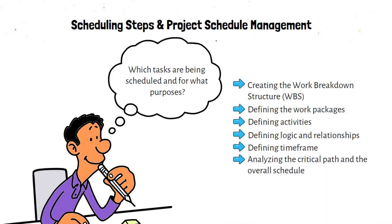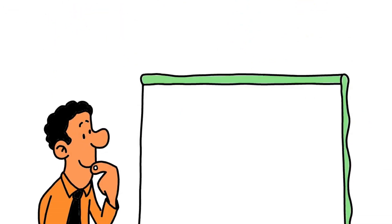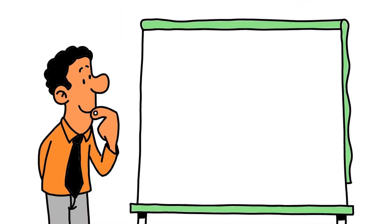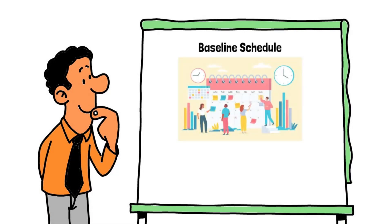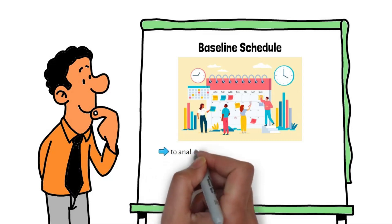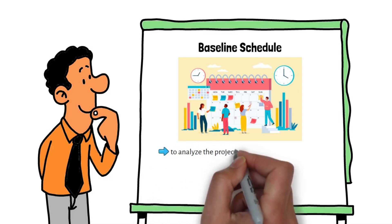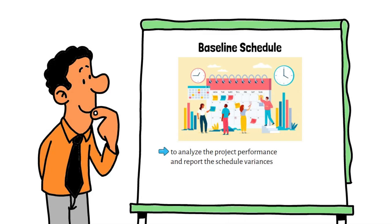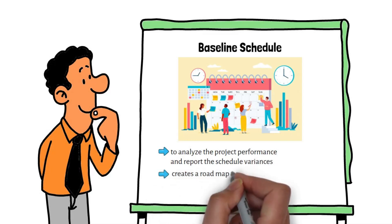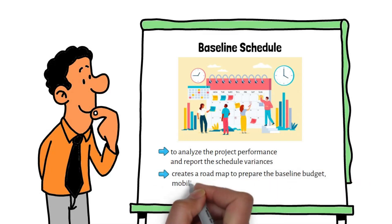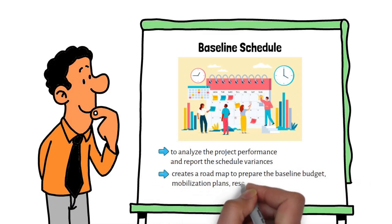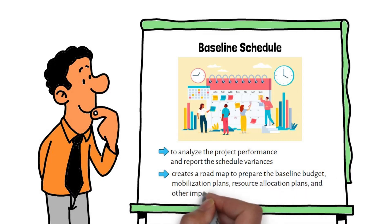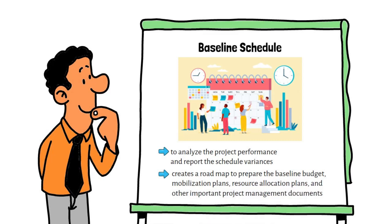A baseline schedule is also known as a schedule baseline or target schedule. It is an approved copy of the project schedule that can be used to analyze project performance and report schedule variances. The baseline schedule creates a road map to prepare the baseline budget, mobilization plans, resource allocation plans, and other important project management documents.